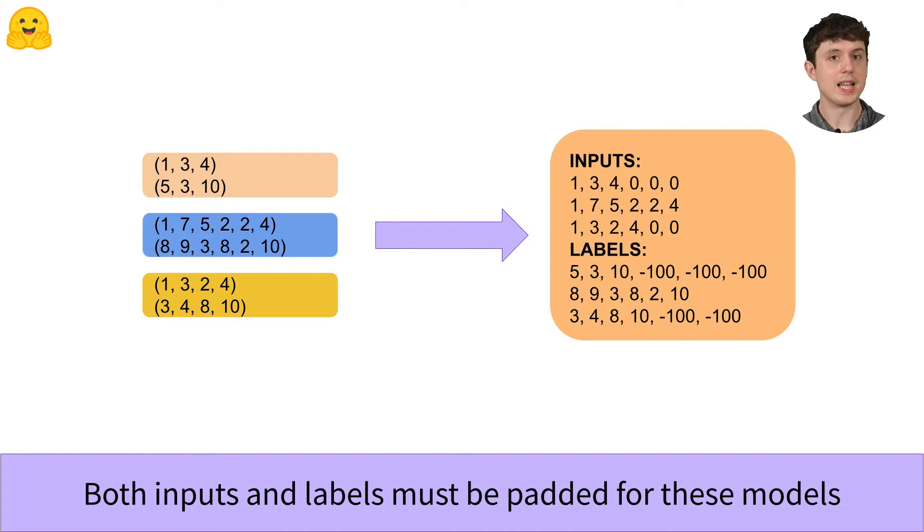So in both of these cases we handle collating that batch by padding the labels as well as you can see here in this example. So inputs and labels will need to be padded if we want to join samples of variable length into the same mini-batch. That's always the case across all data collators and that's exactly what these data collators will do for us for these particular tasks.